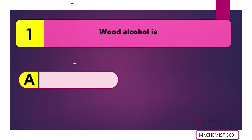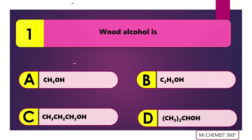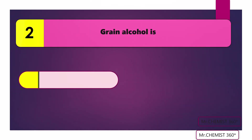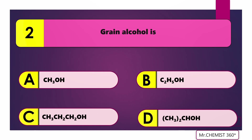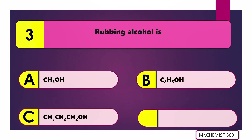Question 1: What alcohol is? The answer is methyl alcohol. Question 2: Grain alcohol is ethyl alcohol. Question 3: Rubbing alcohol is? The answer is isopropyl alcohol.